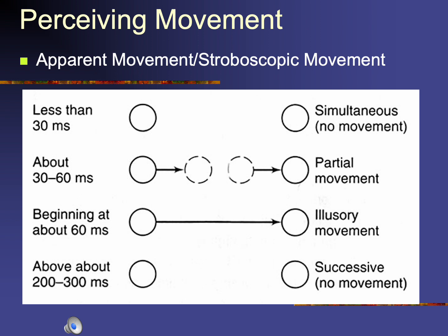What's the time frame for perceiving movement? An object has to be changing its position by some sort of time factor for your brain to construct that it's moving. If the time gets too long when there's a change in object position, you don't see them as moving — you see them as in one place and then another. If an object or a light source changes in less than 30 milliseconds, you perceive it as simultaneous. You see two light sources existing independently, not as if they moved, because your brain can't process things that fast.